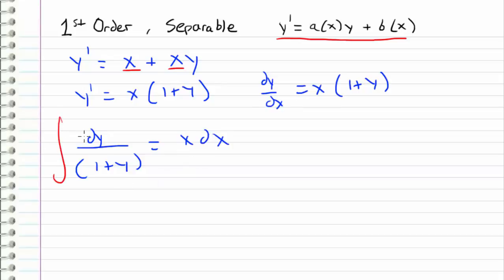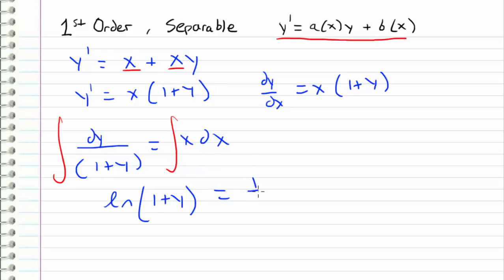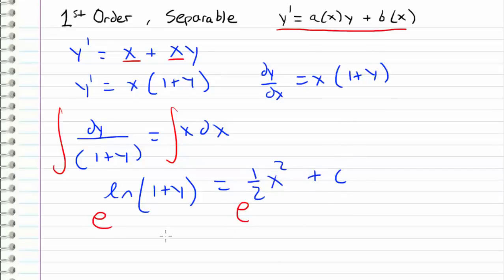So now we can integrate this equation. Just like before, we get the natural log of 1 plus y. And this is going to equal the integral of x, which is one-half x squared plus c. It's very important that we don't forget our constant of integration.